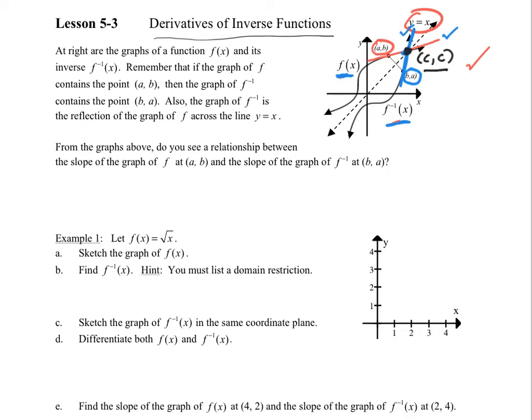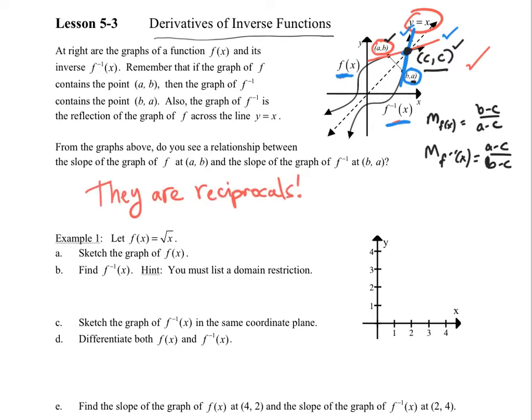Let's do something quick here. Let's call this point (c,c). There is going to be an intersection point of the two tangent lines on y equals x. So if I do the slope on the f of x, that's going to be, I got my b minus c all over a minus c. And then if I take the slope of f inverse of x, I'm going to end up with a minus c over b minus c. What do you notice? Yes, they are reciprocals.